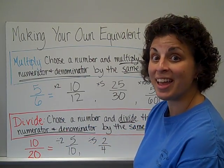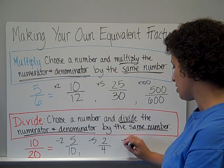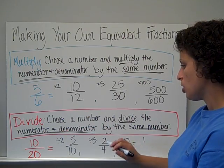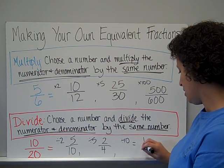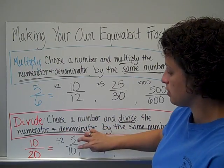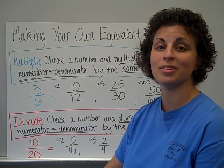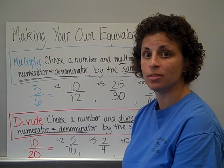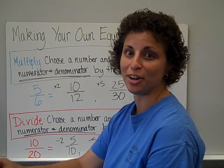I also know I can do ten. So, ten divided by ten is going to be one. Twenty divided by ten is going to be two. So, one-half is the same as two-fourths, is the same as five-tenths, is the same as ten-twentieths. When you're making or naming equivalent fractions, it could literally go on and on and on.